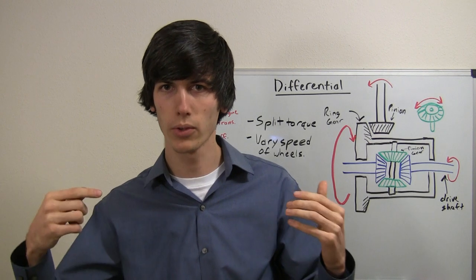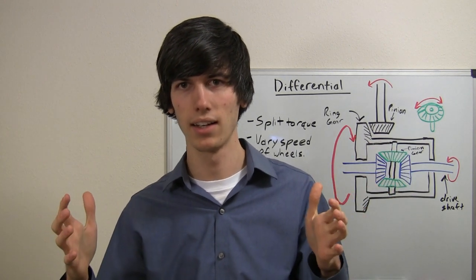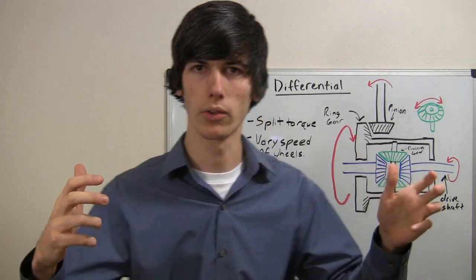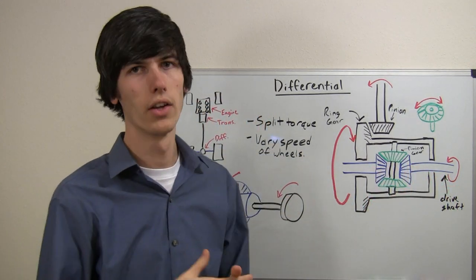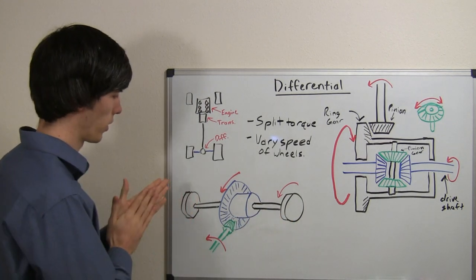your outside tire is going to rotate more than your inside tire. Well, if they can only rotate at the same speed, then you're going to be scrubbing one of those tires as you go around the corner. So that's what a differential allows is for those tires to travel at two separate speeds.